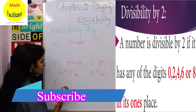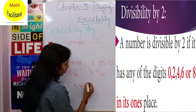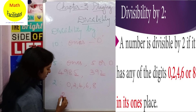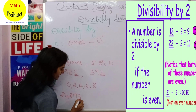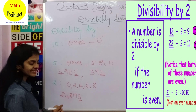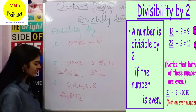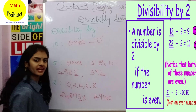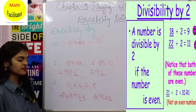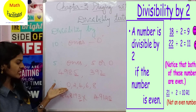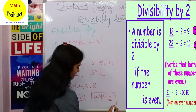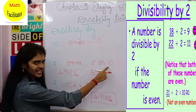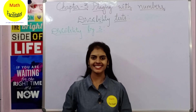For divisibility by 2, if in the ones place there is 0, 2, 4, 6, or 8, then that number is divisible by 2. Take the number 2481930 — in the ones place you have 3, which is not any of these, so it is not divisible by 2. For 49120, the ones place is 0, so it is divisible by 2. Also, since ones place is 0, it is also divisible by 10 and by 5.